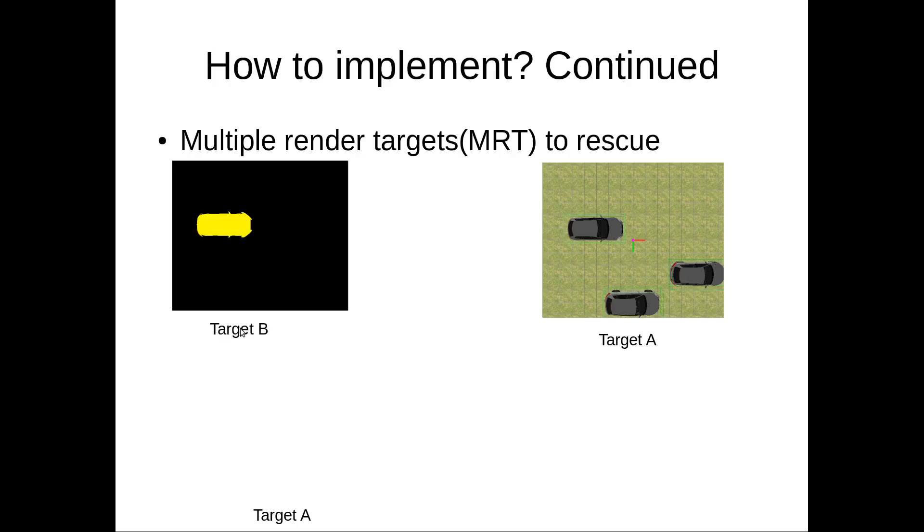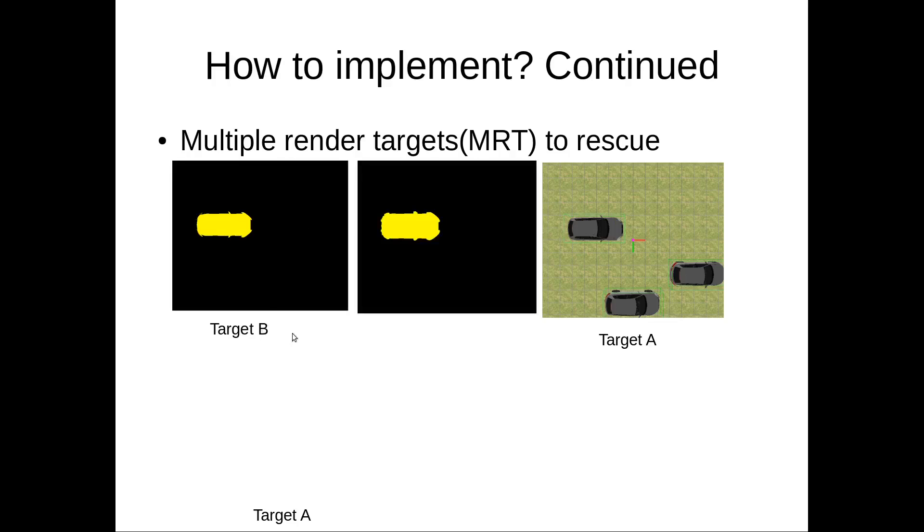And next, we have a render target B. In target B, we only render this object with a highlighting color. And this is the render shader.